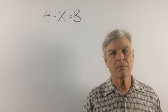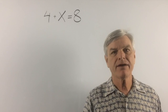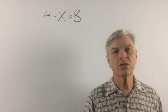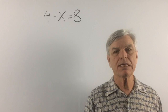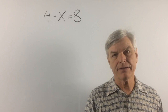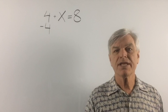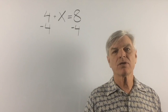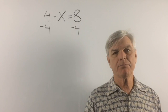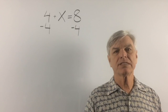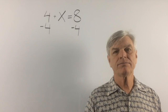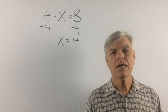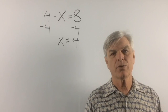Let's try a couple more addition problems. Here we have 4 plus x equals 8. We want to get the x alone, so we're going to add negative 4 to both sides. Whatever we do to the left-hand side, we have to do to the right-hand side. Adding down, 4 plus negative 4 is 0, so we leave that blank. x plus 0 is x. Bring down the equal sign. 8 minus 4 is 4. So x equals 4.